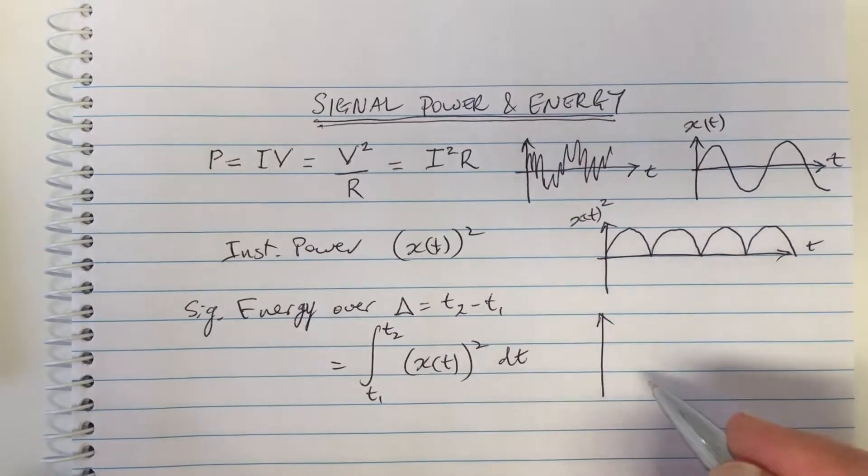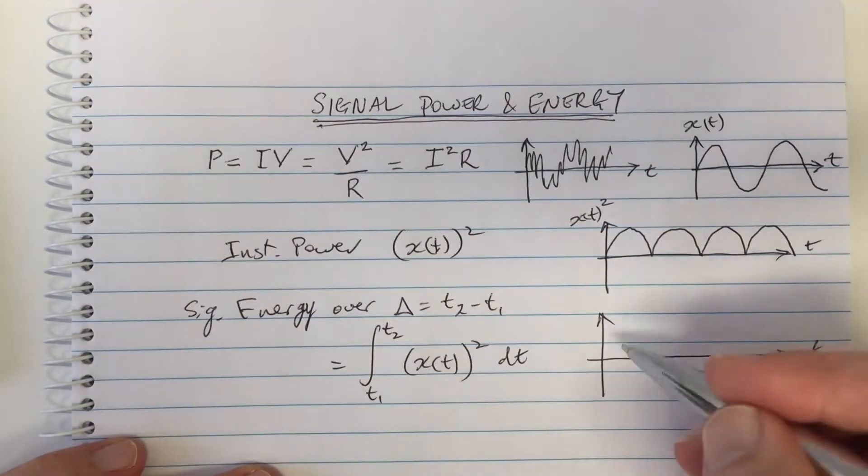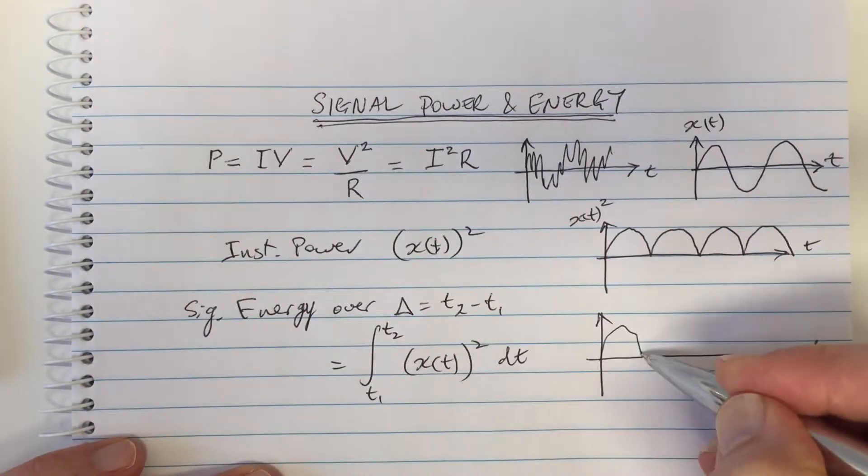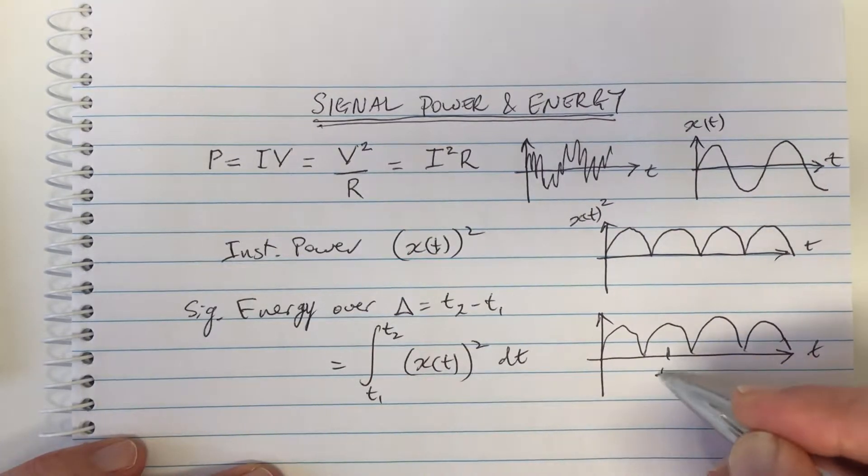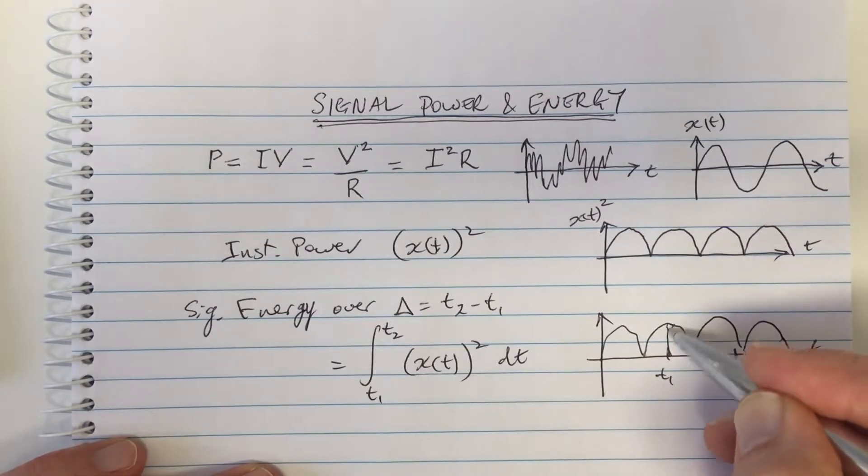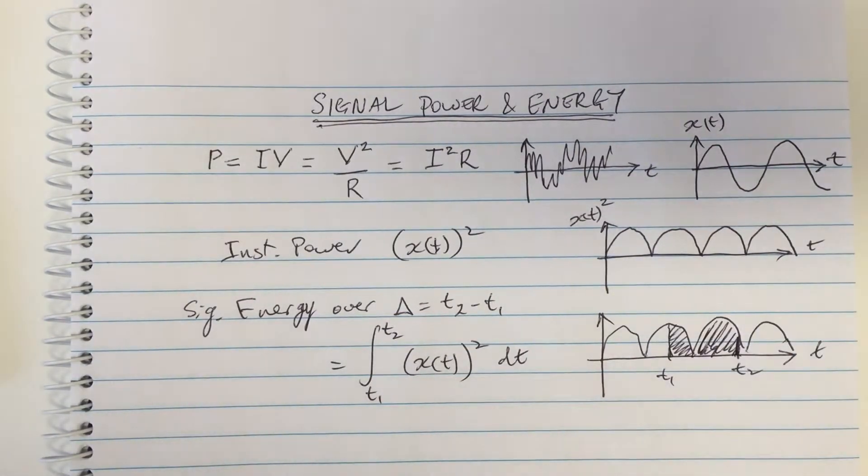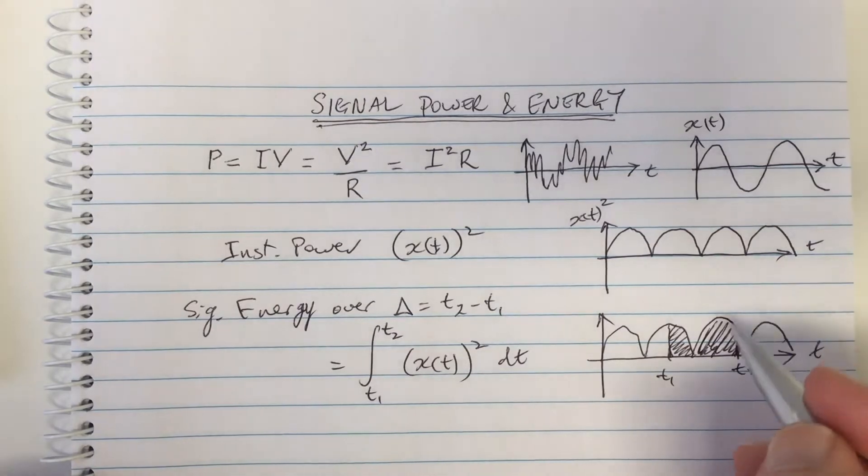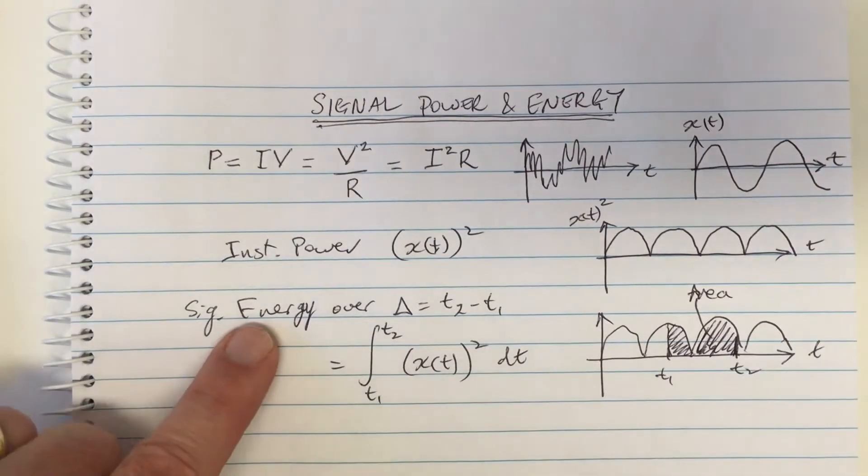And when we look at this over here, what does that mean in terms of our waveform? Well it means we are, over the period of time that we're interested in, whatever that happens to be, let's say that's t1 and let's say this is t2, then we're adding up the area under the instantaneous power signal. And that area there, the area is the signal energy.